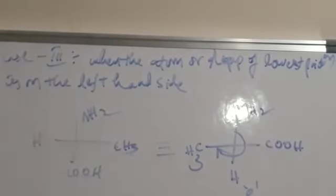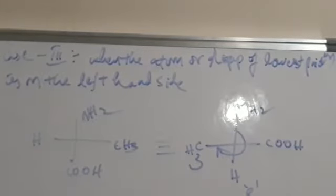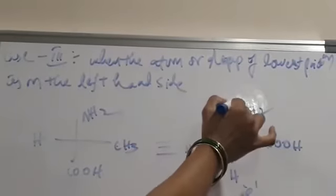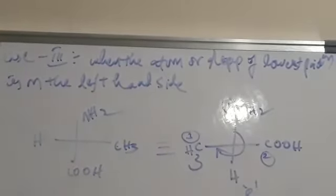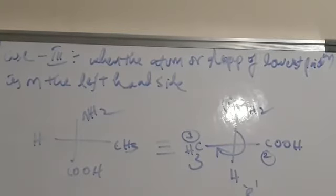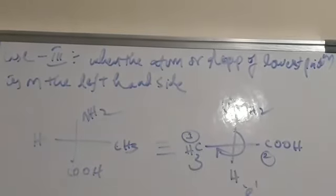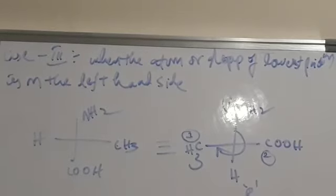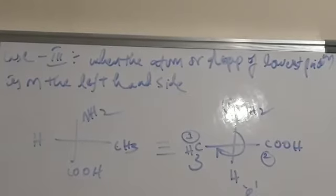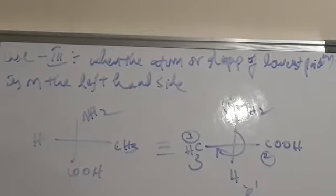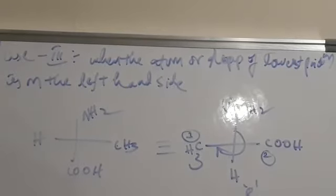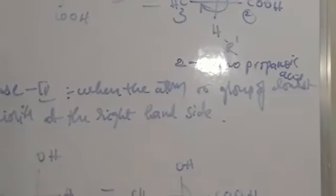Now we have to give the priority to this compound — first, second, third priority — and rotation is in clockwise direction. The compound is 2-amino-propanoic acid. So this is case 3.